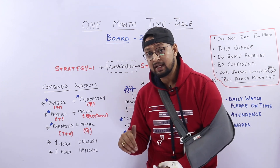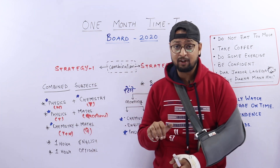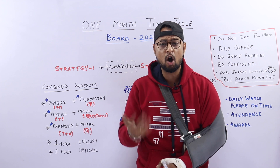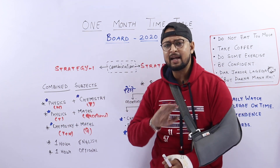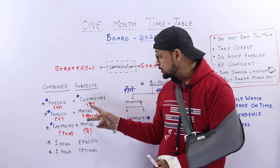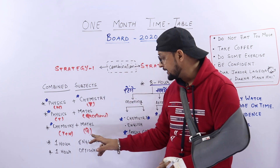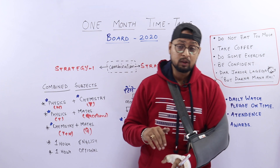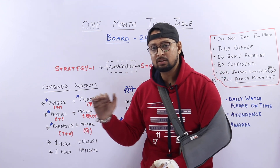Another combination is the next day: Physics plus Maths. Because Physics is theory and logical reasoning, and Maths runs parallel. The third day is Chemistry plus Maths — Chemistry theory plus numericals, and Maths questions. So we have two days Physics and Chemistry, and a third day for a different combination.